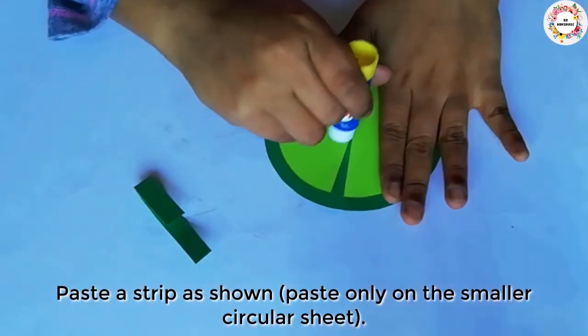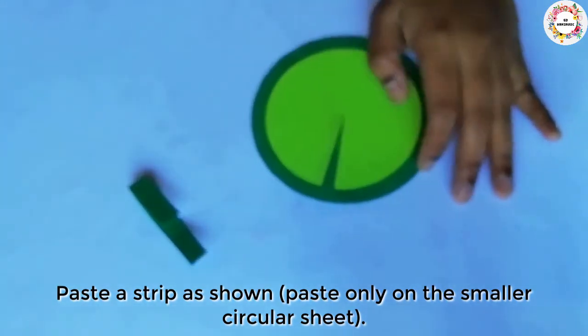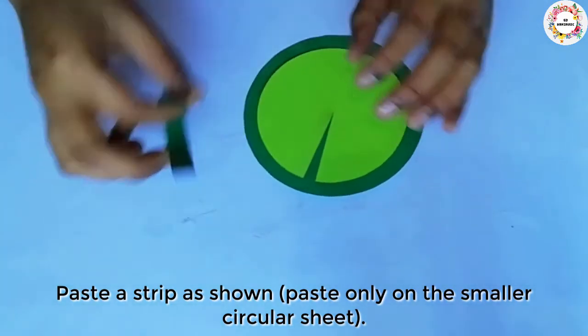After that, we will put a strip on it. You have to place the strip just on the small sheet so that it can move.